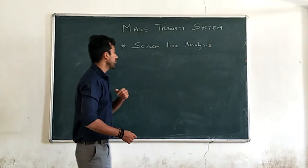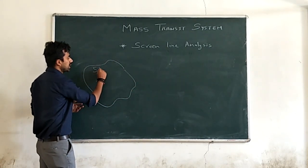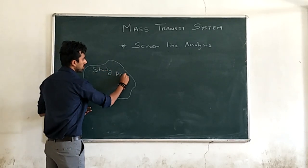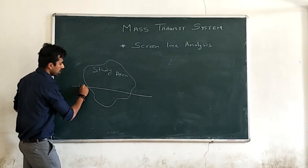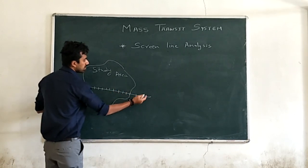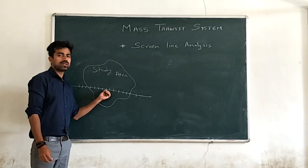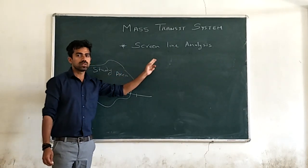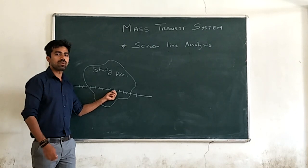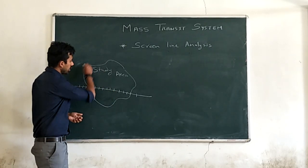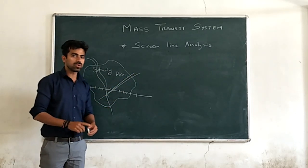For example, I will show you by drawing a figure. Let us assume a study area with an irregular body — this is your study area. If any railway line, canal, or river crosses it like this, a railway line is crossing your study area and it will divide your study area into two parts. So this railway line you can call a screen line — it is an imaginary line which separates your study area into two different parts. It will be natural or physical barriers like railway, river, or canal which crosses and divides your study area into two different parts.